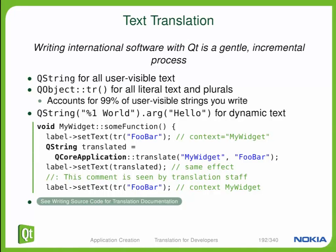Sometimes you may not have a QObject scope. You may be in some other class that does not inherit from QObject. Here you can use a static function from QCoreApplication called translate. Translate actually takes two parameters: not only does it take the string to translate, but it also takes what's called a scope. Here the scope we're calling myWidget. Strings that use the TR function automatically get a scope to the class name in which the string appears, so foobar would automatically get a myWidget scope. That's going to help your translator determine where in the application this string comes from.